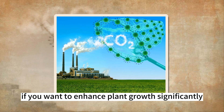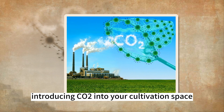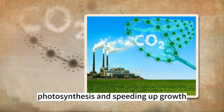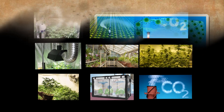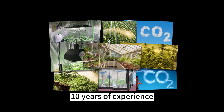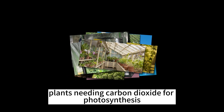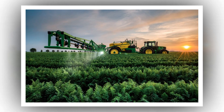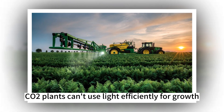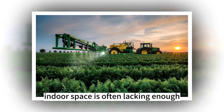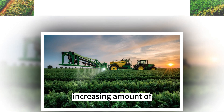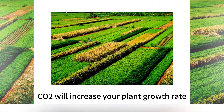If you want to enhance plant growth significantly, introducing CO2 into your cultivation space is a highly efficient method for enhancing photosynthesis and speeding up growth. Here is a brief guide based on more than 10 years of experience. Plants need carbon dioxide for photosynthesis — without CO2, plants can't use light efficiently. Indoor spaces often lack enough CO2, which restricts plant development. Increasing CO2 will increase your plant growth rate.